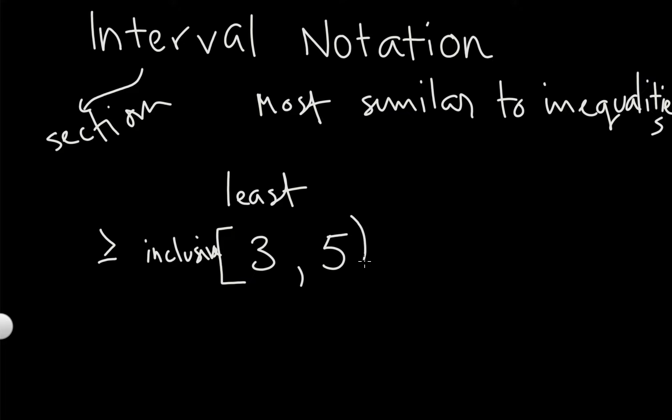We determine whether it's included or not. If it's included, we use the square bracket. So this is inclusive. This is like the greater than or equal to. Then it's followed by the greatest value. Again, we decide whether it's inclusive or exclusive, meaning are we going to include the five or not?